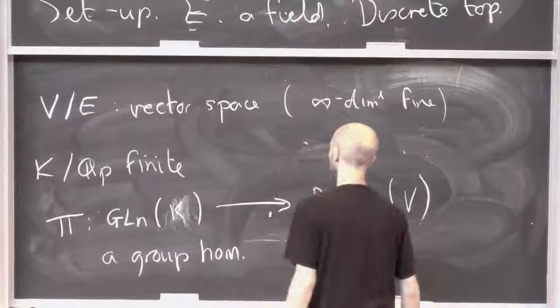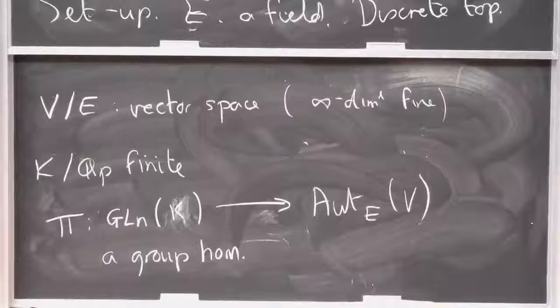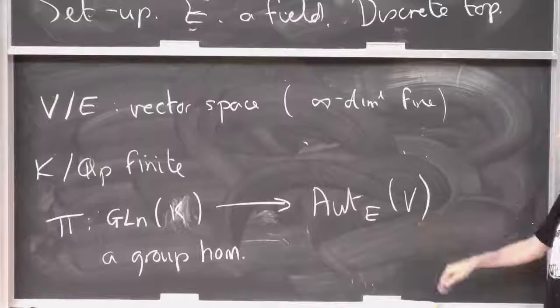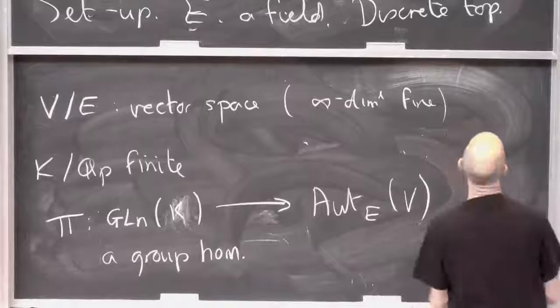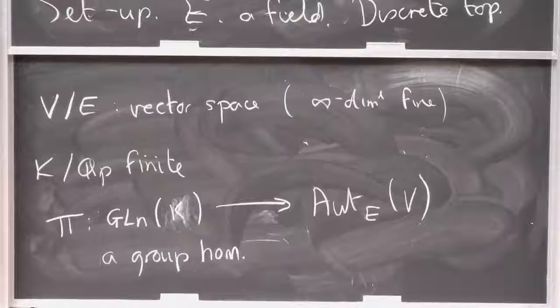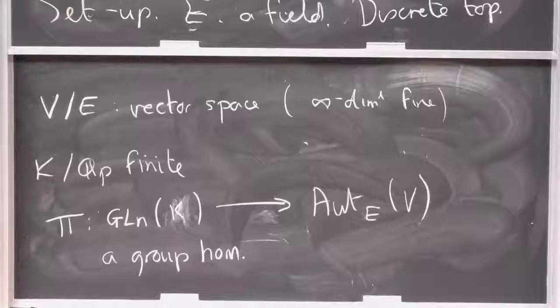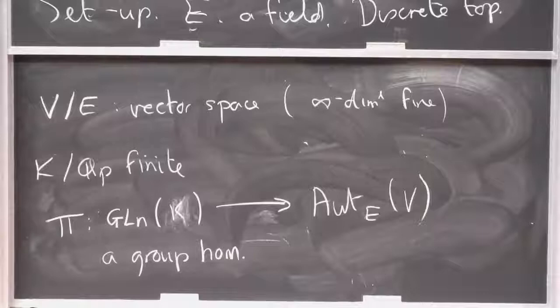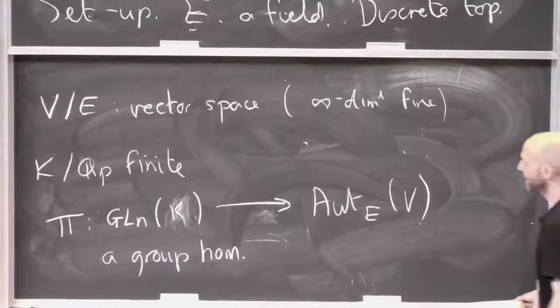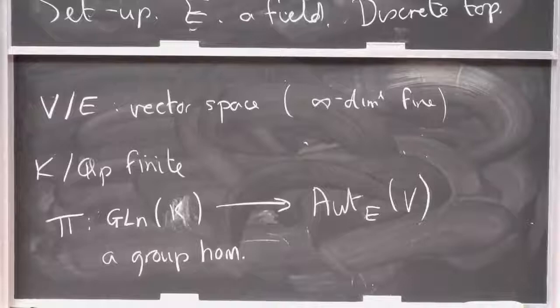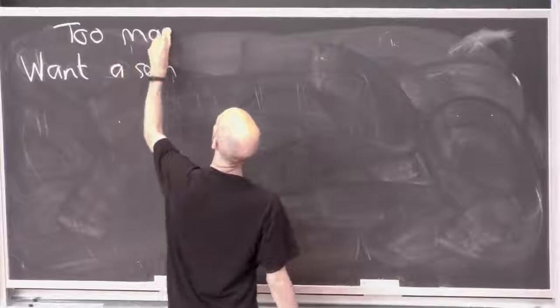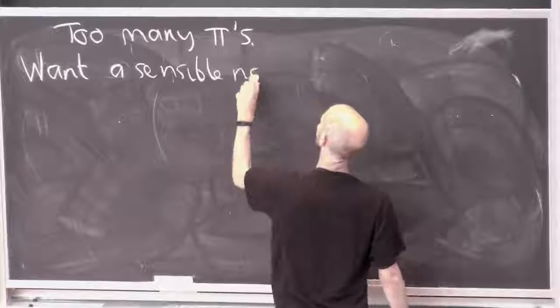So there's no notion of continuity because I want E to be kind of a random field. And I don't want to put a topology on E. So I don't really want to put a topology on this. I think, anyway, this is the situation. There's too many of these, right? This can't be the right definition. GLN of K definitely does have a topology, even if I don't care about the topology on E. GLN of K definitely has a topology. And I somehow want pi to respect that topology in some way. So I want a notion of continuity.